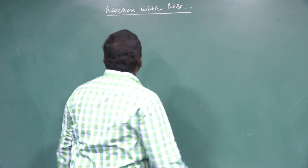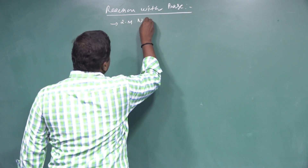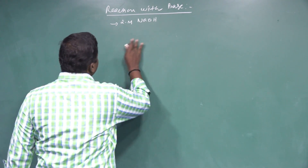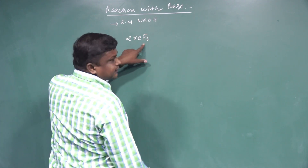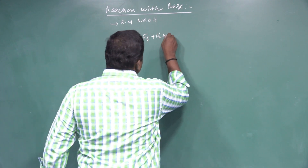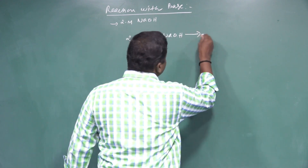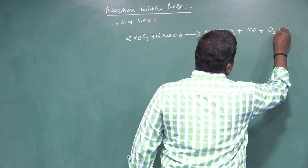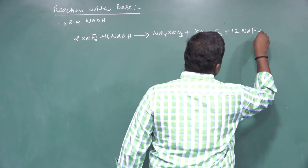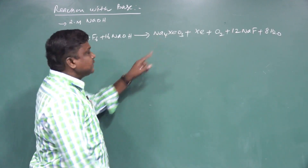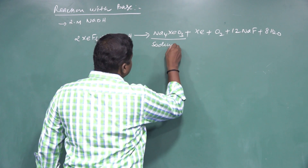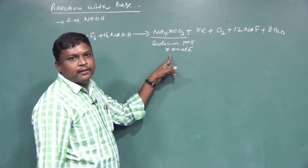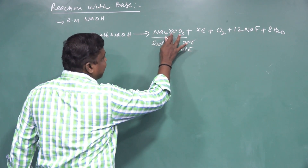Reaction with base: a 2.5 molar solution of NaOH, sodium hydroxide, reacts with xenon hexafluoride. Xenon hexafluoride followed by NaOH gives the product named sodium perxenate, that is Na4XeO6.